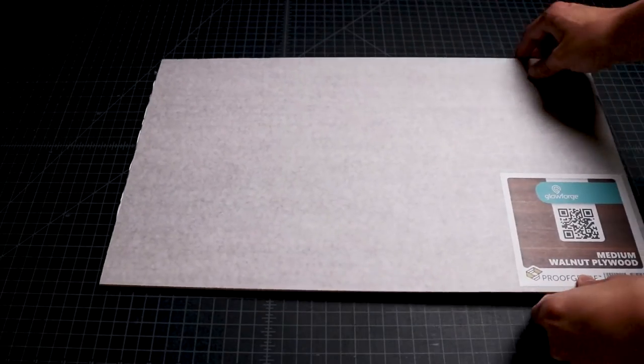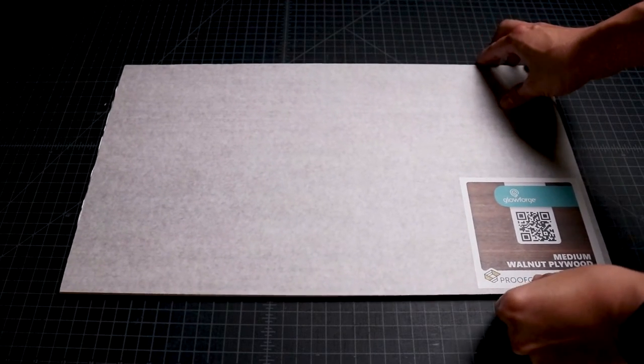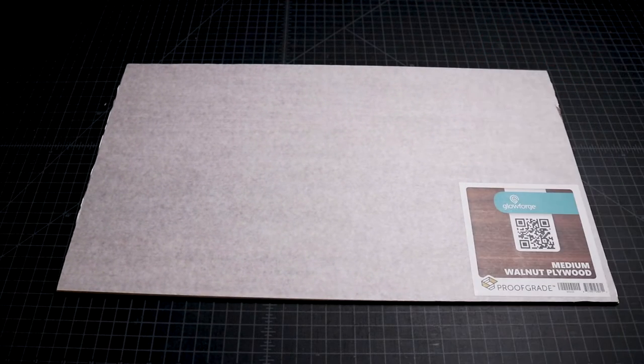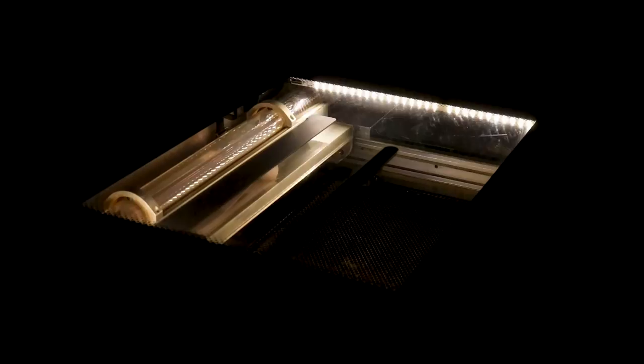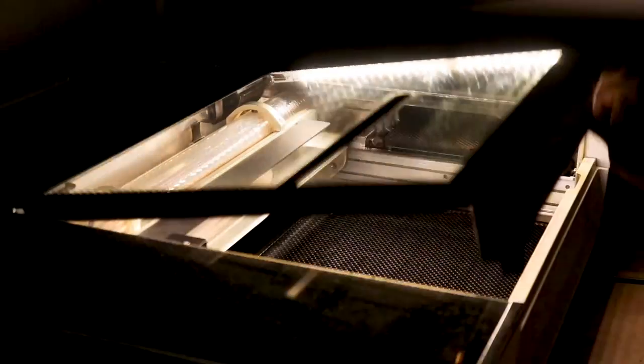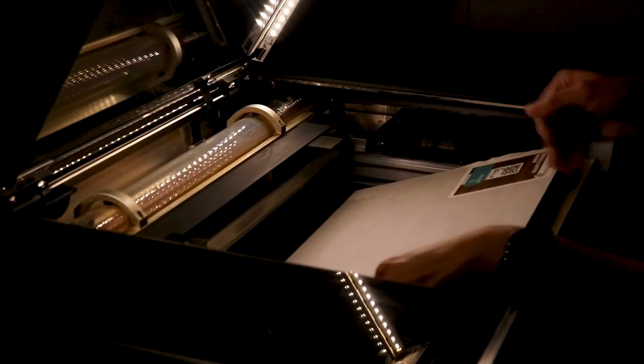Now that the drawings are complete, I gather my sheets of walnut plywood that I bought from Glowforge, and my Maxi-Cure glue, which I'll be using to join all of the panels together. I turn on my Glowforge, open the lid, insert the material, and load up my laptop.